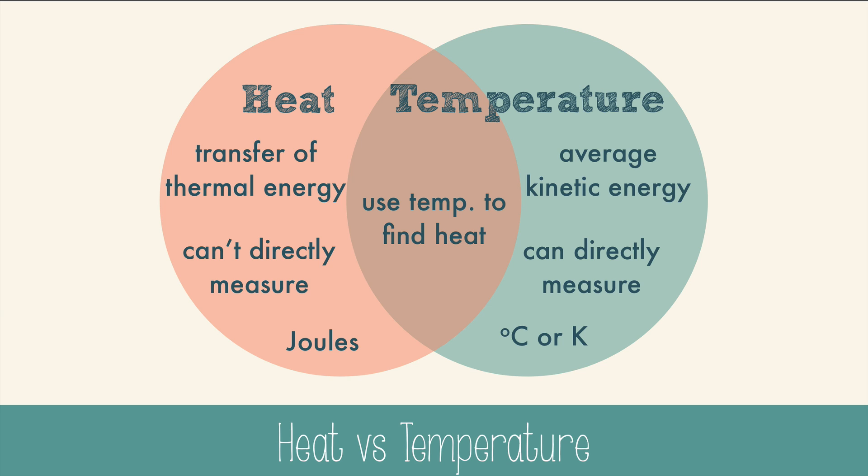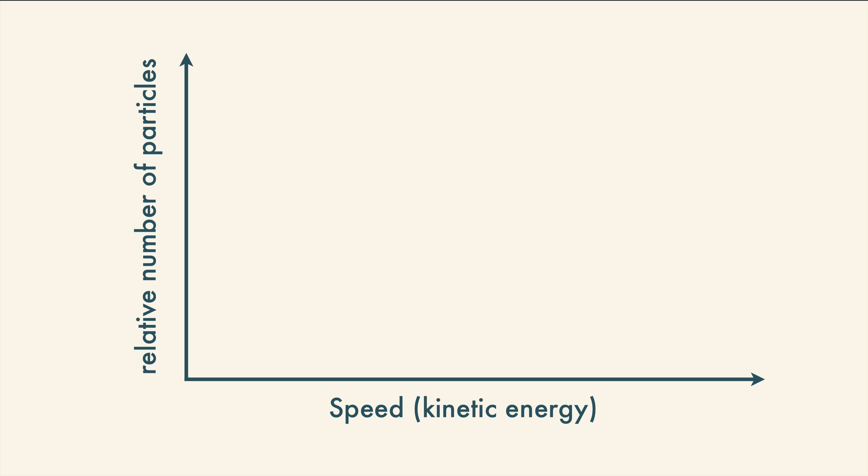Let's look at temperature with a little more depth to make sure we really understand. We'll start by viewing a scale that measures the relative number of particles at different speeds. Particles are always moving, unless they're at absolute zero. These few particles, with a slower speed, have less kinetic energy than these particles, that have faster speeds and high kinetic energy.